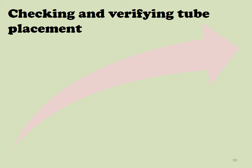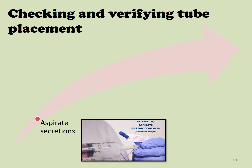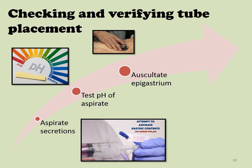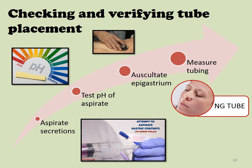Checking and verifying tube placement will occur on insertion. After insertion, placement must be checked at least once per shift, before feeding, and before medication administration. There are four steps to placement verification: first, gastric secretions or intestinal fluid will be aspirated and visually examined; next, the pH of the aspirate will be assessed; the third step requires auscultating the epigastric region while injecting five to twenty milliliters of air; finally, the length of the tube inserted is confirmed by examining the insertion mark on the tube.